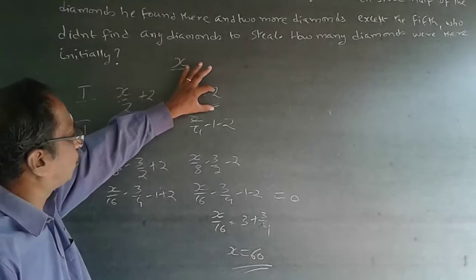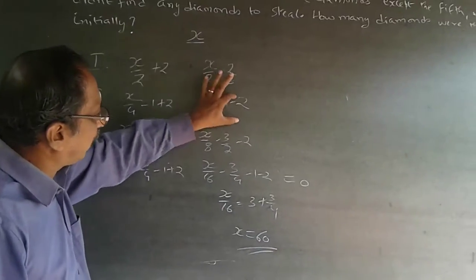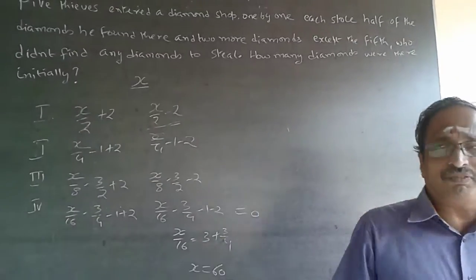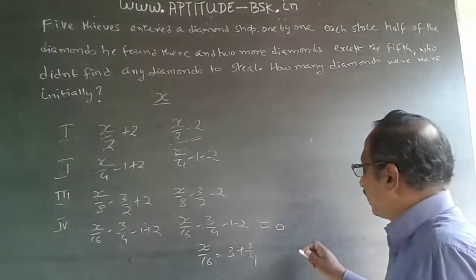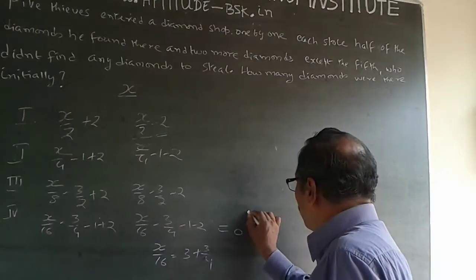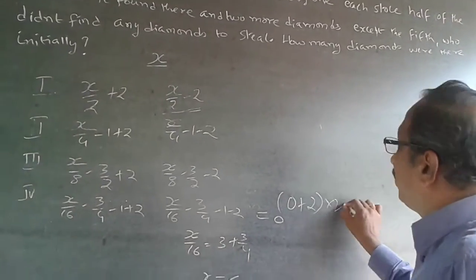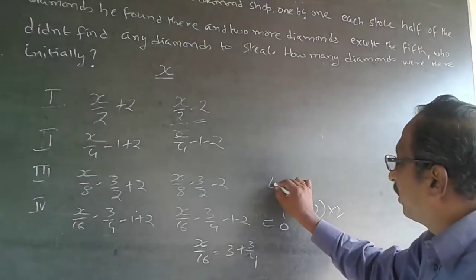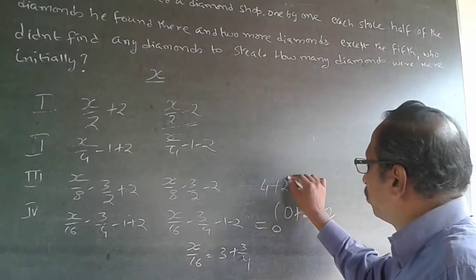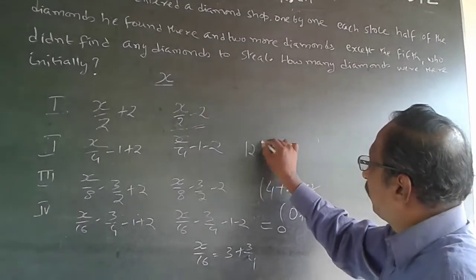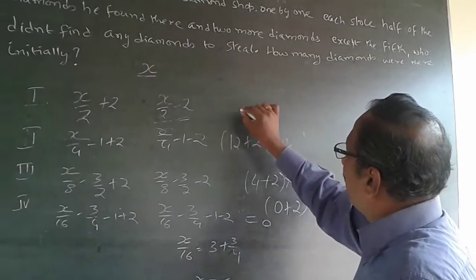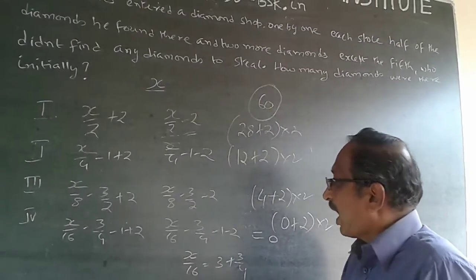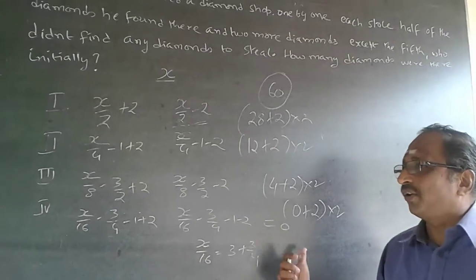Starting from the balance after the fifth thief, which is zero: zero plus two, times two equals four. Four plus two, times two equals twelve. Twelve plus two, times two equals twenty-eight. Twenty-eight plus two, times two equals sixty. The answer is sixty. Either way — algebraic or reverse — first understand the equation, then try to do it faster.